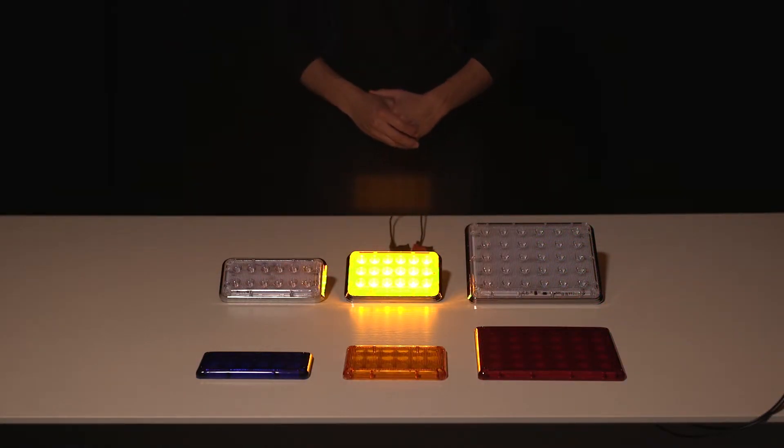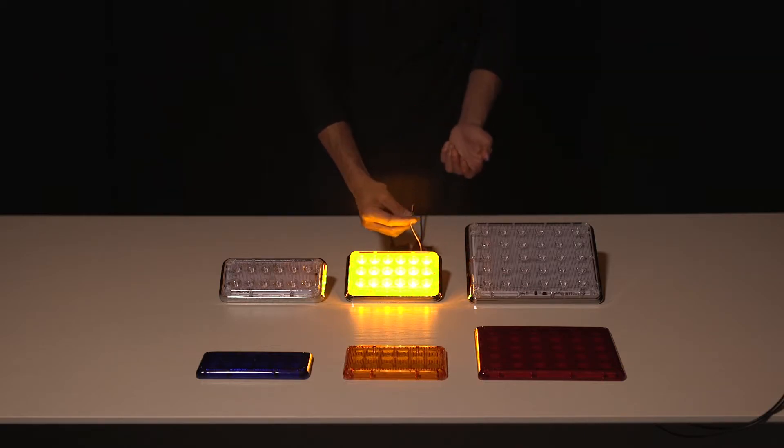And here we have our Alpha 6x4 in all amber. As you can see one of the patterns is a steady burn. To change my patterns I simply take my yellow wire and I touch it to my positive.